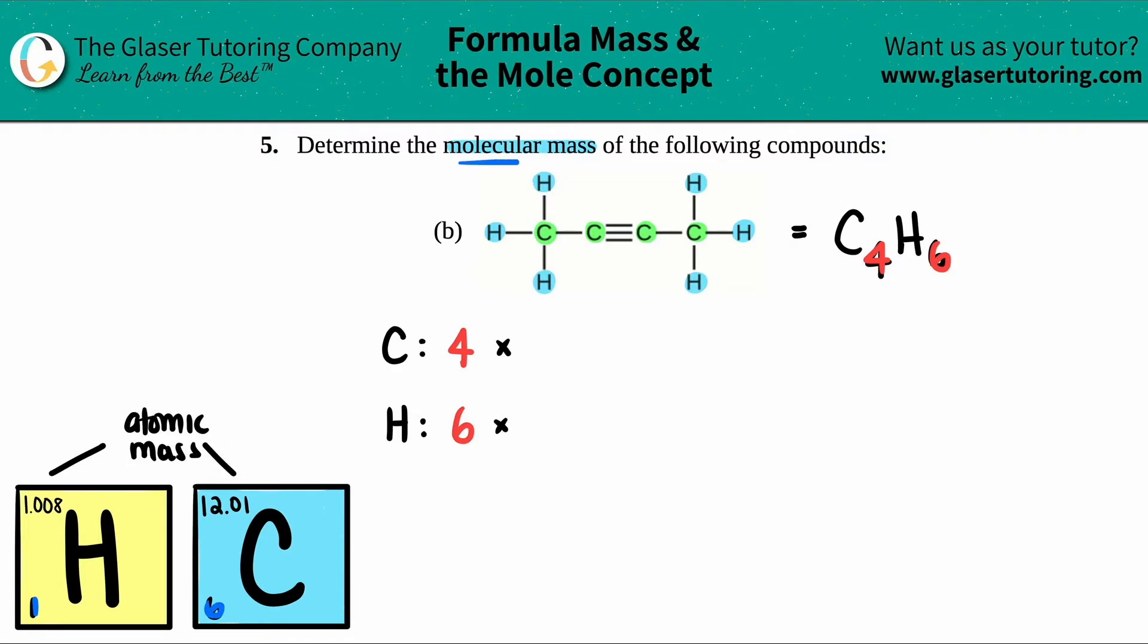Since we're dealing with the small, small, small scale of molecules and atoms, we're going to be using the unit AMU. AMU stands for atomic mass unit. So all we have to do is just multiply how many we have by what is the average atomic mass of each element.